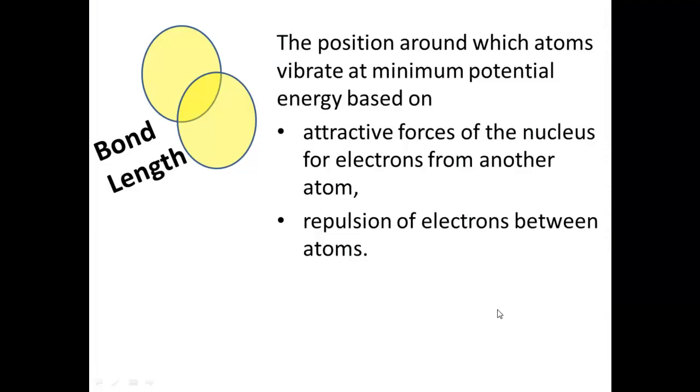This particular framework asks us to think about how long is this bond from this atom to this atom. If we call this atom A and this atom B, that bond length is the position around where these atoms vibrate. They're in constant motion, maybe a little further apart sometimes, a little closer together, they're moving around in circles.